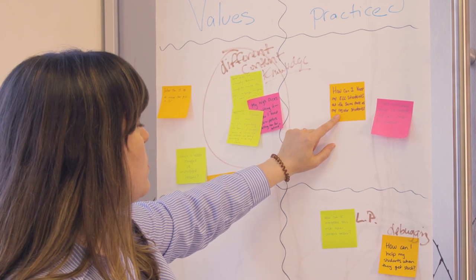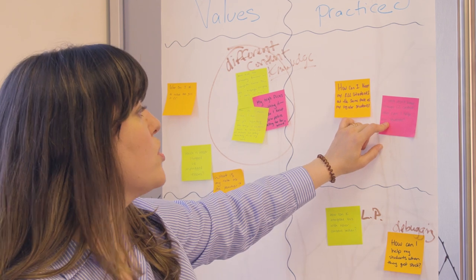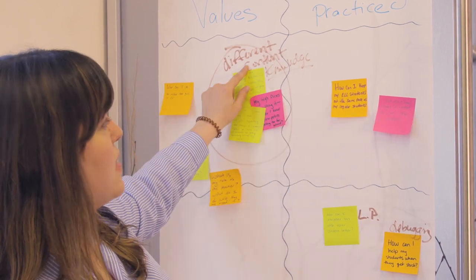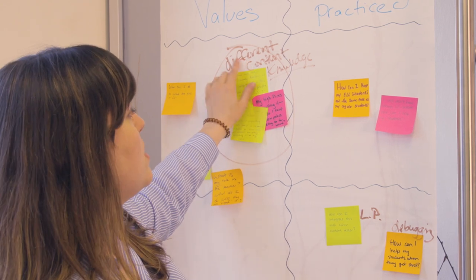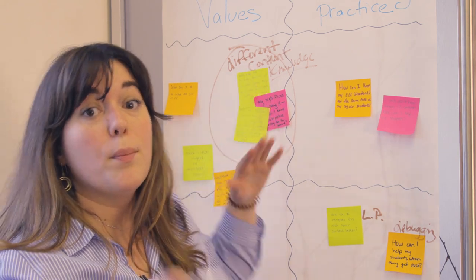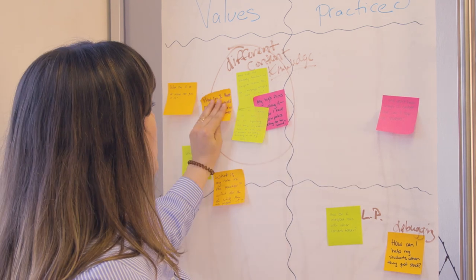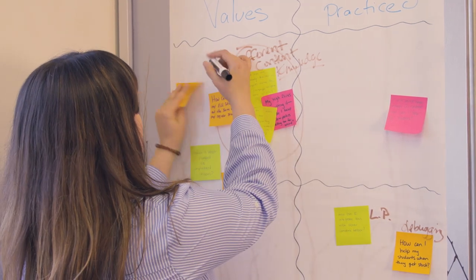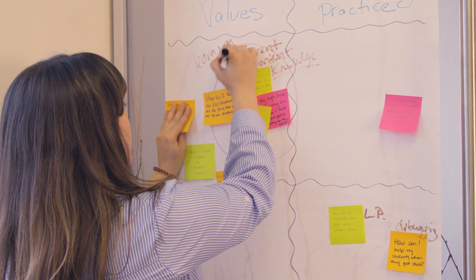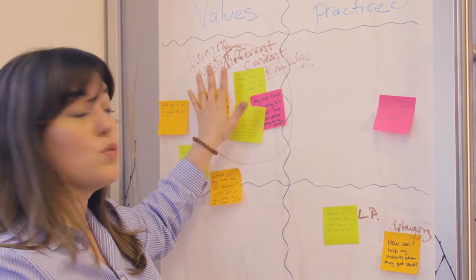The two remaining teaching practice post-its are about supporting English language learner students and addressing a lack of CS content knowledge. I think we can open up the category we made about 'different content knowledge' and expand it to include diverse learning needs, because those are really related. I'm going to move this over and label it: 'diverse learning needs plus different content knowledge' — one bucket.